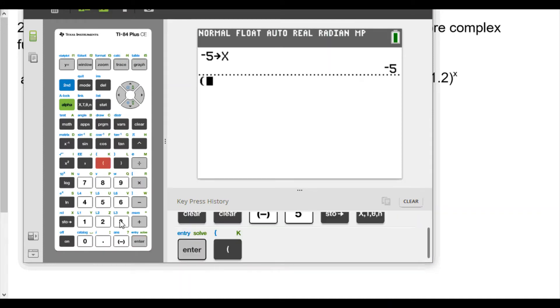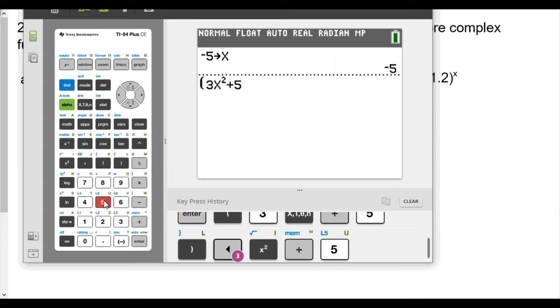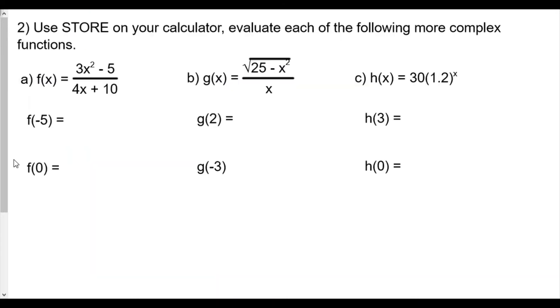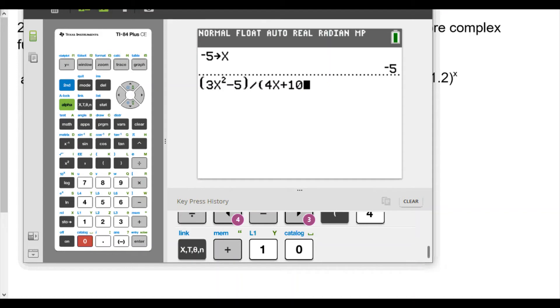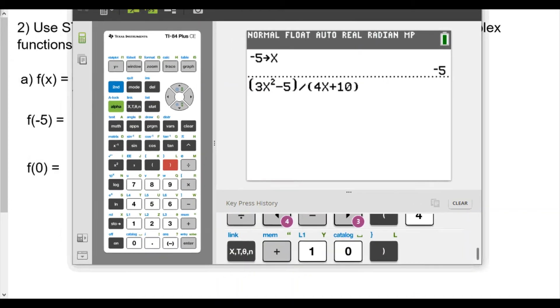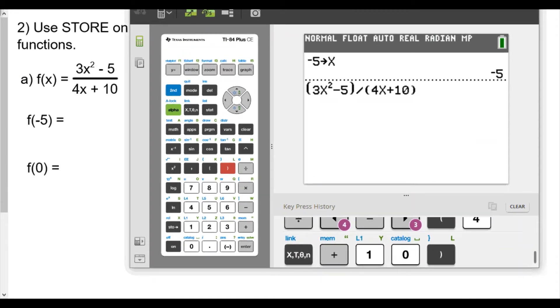Parenthesis because we want to make sure everything's put together. So 3x squared minus 5, close parenthesis, divided by, I believe it's 4x plus 10. Parenthesis 4x plus 10. I have such bad memory, ladies and gentlemen. I should just slide this over. Let me close parenthesis here first, slide this over to take a look, and there it goes.